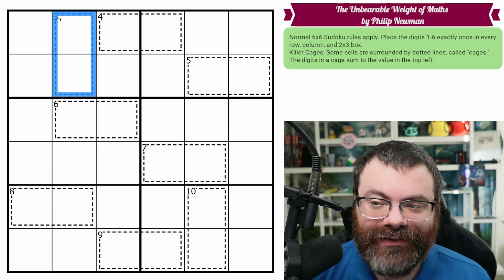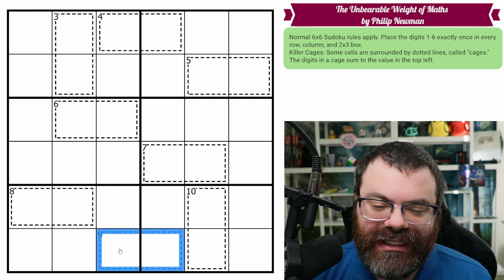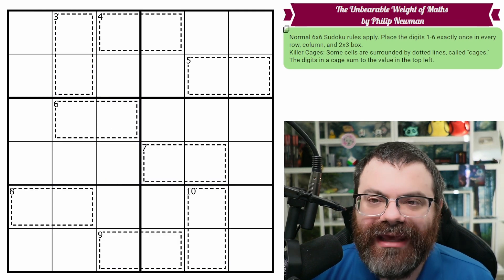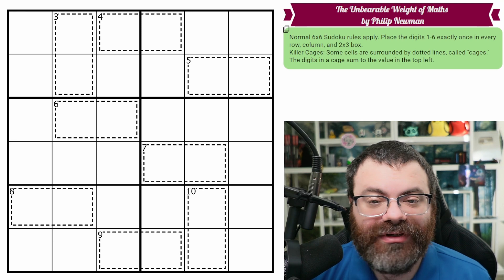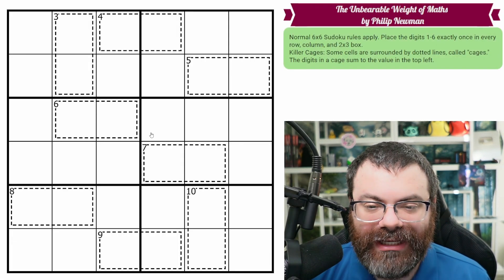All it means is the digits in the cage sum to the value in the top left. Normally we would say digits can't repeat in a cage, but none of these cages need to use that, so we just omitted that. And those are the rules. There's a link in the description if you'd like to try the puzzle yourself, and I'm going to get started right now.